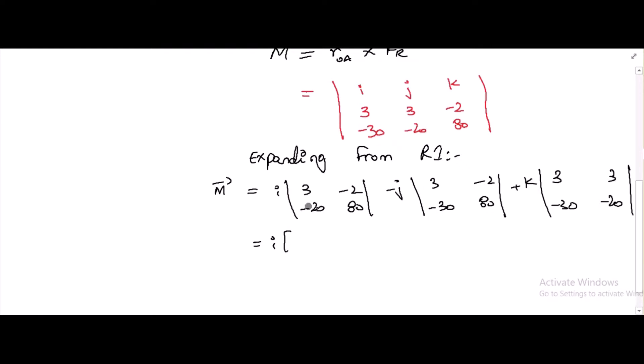It becomes 240 minus 40 for i, minus j times 240 minus 60, plus k times negative 60 plus 90.